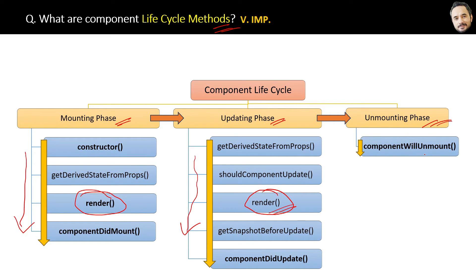Finally, in the unmount phase we have only one method, which executes last. Now we are not going to cover all the methods, since not all of them are equally important. We will cover the most important ones, which I've marked in bold letters here: constructor, render, componentDidMount, componentDidUpdate, and componentWillUnmount.